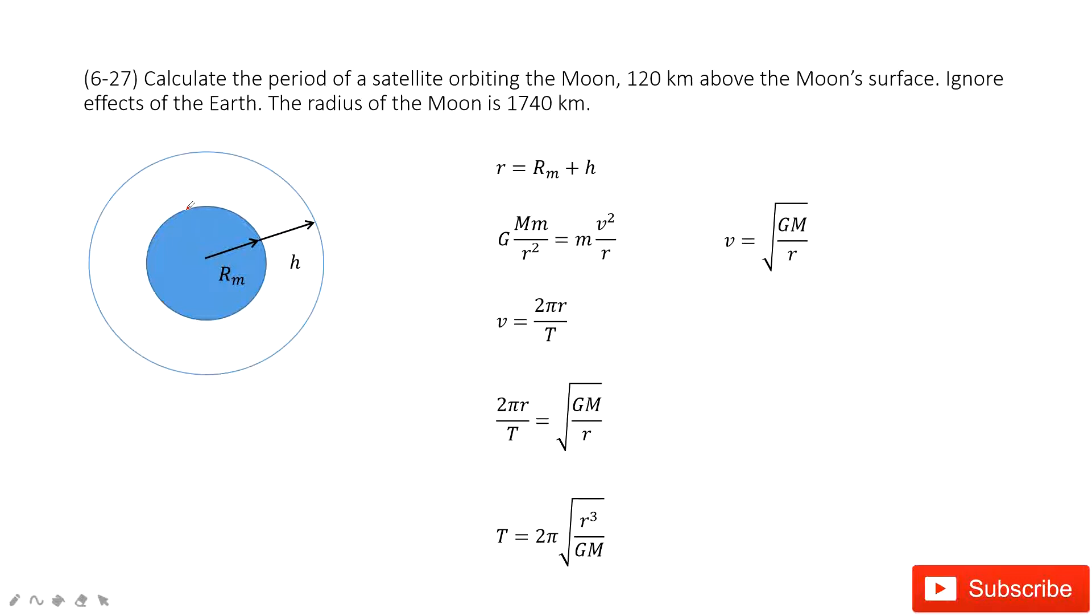In this one, we can see this is the moon, and we have the space shuttle moving in a circle at a distance h above the surface of the moon. This h is given as 120 km, and also the radius of the moon is given. I ask you to find the period for this space shuttle.